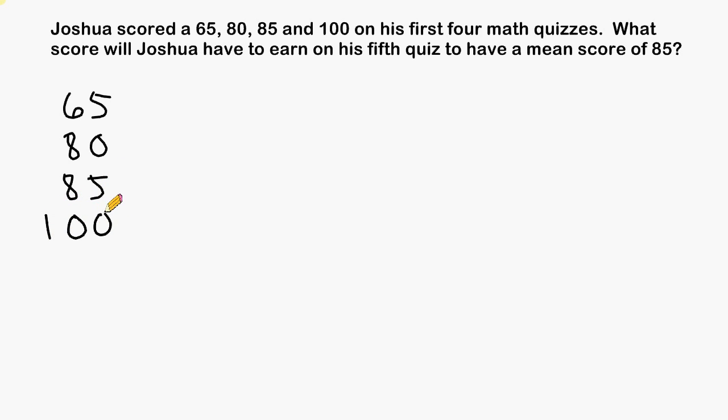And what we have to determine is, what will Joshua have to score on his fifth quiz? So when we add up all five of these scores and divide that total by five, we come up with a mean score of 85.